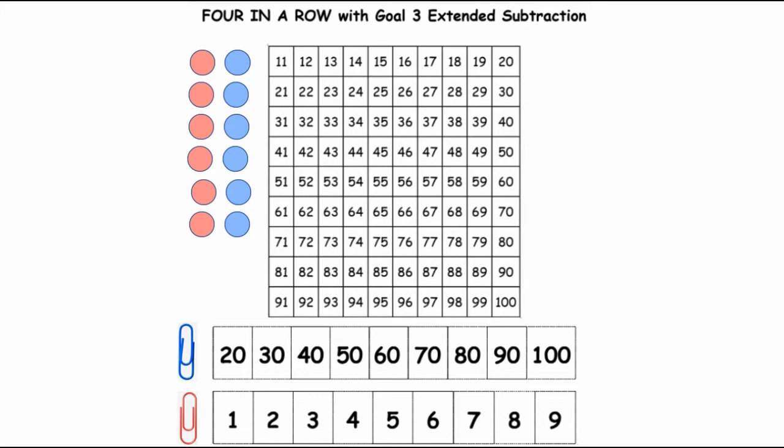So there's two things that kids have to remember, and that's that the first player does something different than every other turn. So the first player gets to move both—in this case the blue paper clip and the red paper clip—anywhere they'd like.